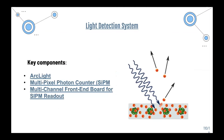A liquid argon time projection chamber neutrino interaction contemplates two different phenomena: ionization, which I touched on earlier, and scintillation — the emission of photons. I also worked on the light detection system. The light detection system is basically a combination of different devices able to detect photons, produce a signal, amplify it, digitize it, and allow us to extract data files and assess the data through, for example, graph plotting and curve fitting.